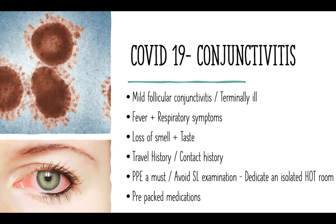What is relevant in today's scenario is COVID-19 conjunctivitis. This is a very rare phenomenon — there is nothing really substantial in the recent literature. There are vague reports that terminally ill COVID-19 patients can have mild follicular conjunctivitis, but importantly they will have fever, respiratory symptoms, and loss of smell and taste, along with a travel or contact history. It is advised that when seeing conjunctivitis cases, PPE should be a must, avoid slit lamp examination as much as possible, maintain a dedicated isolated room for such cases, and keep medications pre-packed to reduce cross-contamination.